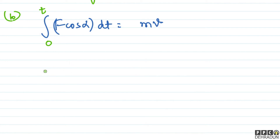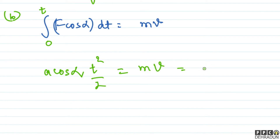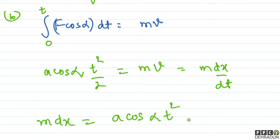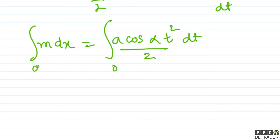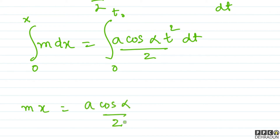F को at लिखने पर: integration of a·cosα·t dt = t²/2 = m·v। v को dx/dt लिखते हैं, तो m·(dx/dt) = a·cosα·t²/2। इसे integrate करते हैं: m·dx = a·cosα·t² dt / 2। t = 0 पर x = 0 और t = t₀ पर x निकालनी है। m·x = a·cosα/2 × t³/3 = a·cosα·t₀³/6.